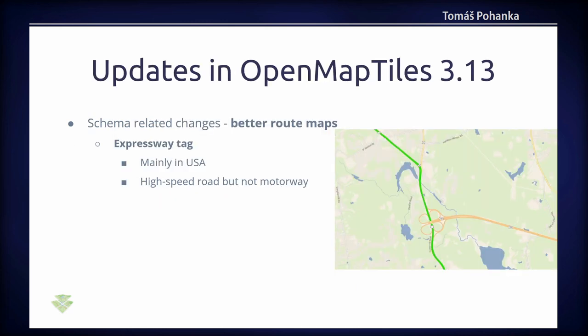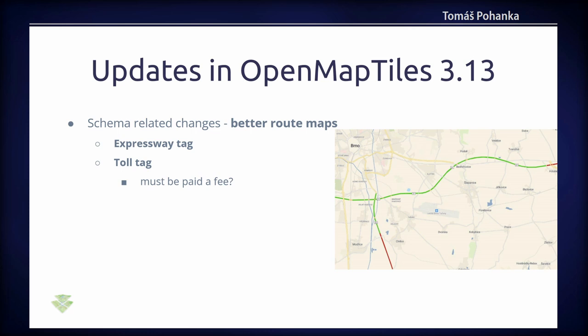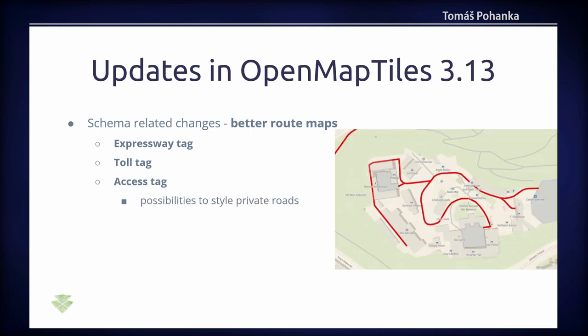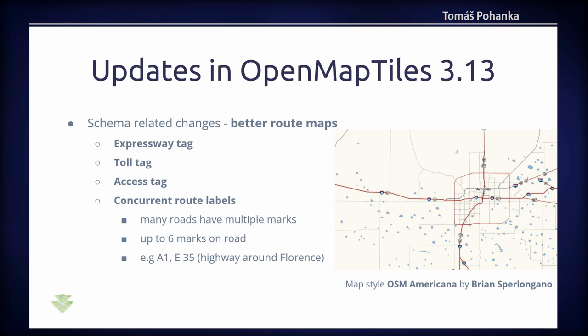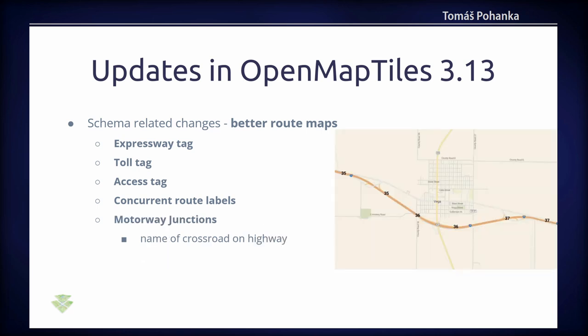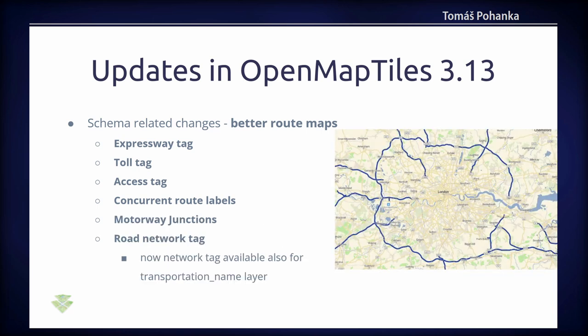The main idea for version 3.13 was better roadmaps. There was Expressway tag support, Toll tag, and you can style paths with no public access. Thanks to Brian from OSM Americana, who pushed hard for concurrent road labels — for example, around Florence, highway A1 is also E35, so one highway can have two shield marks. There are also labels for motorway junctions and you can style network labels based on the network tag, or show names for shipways.